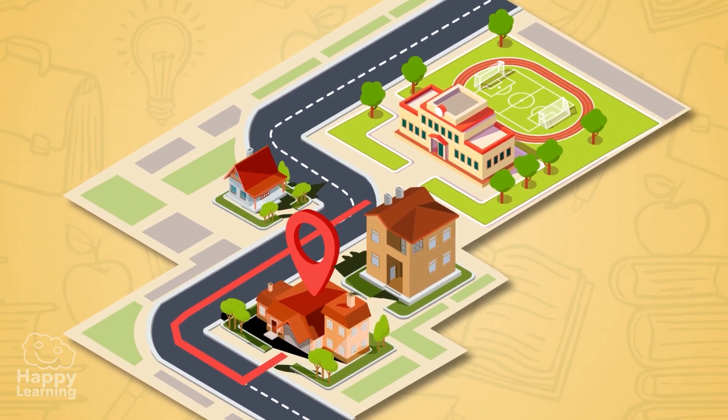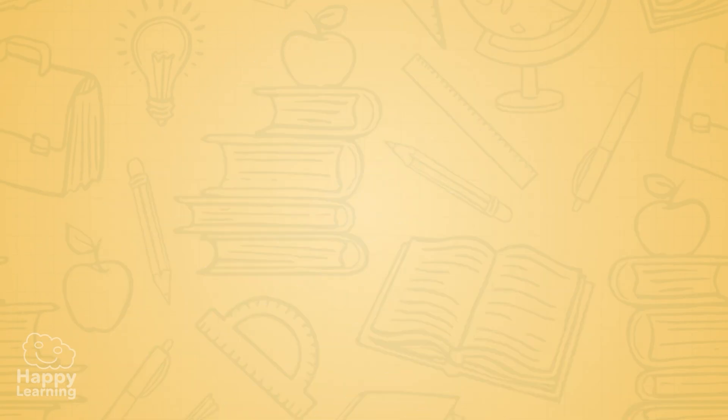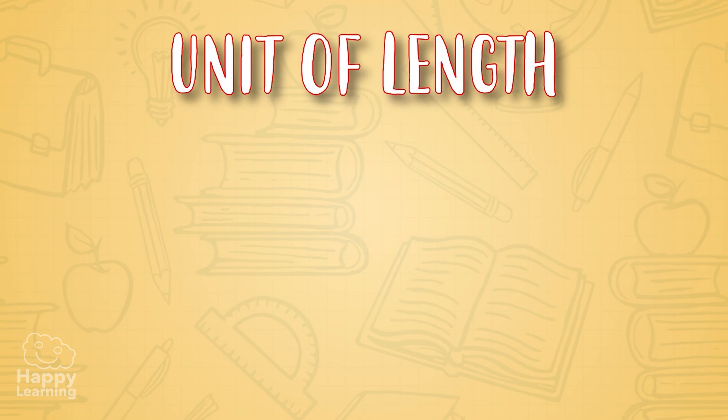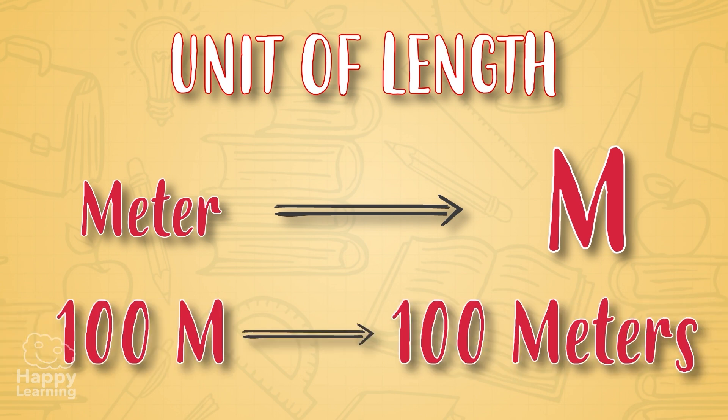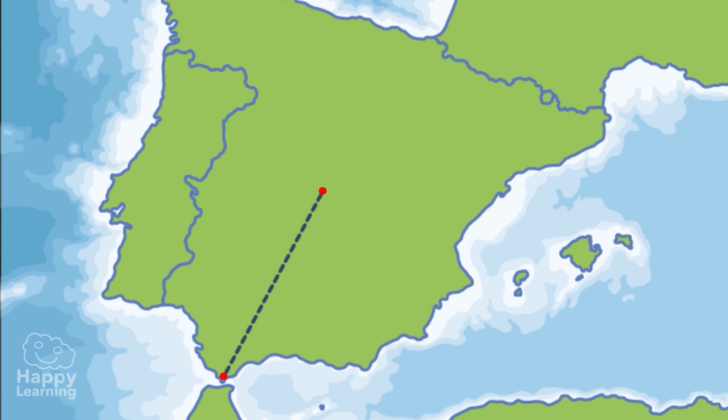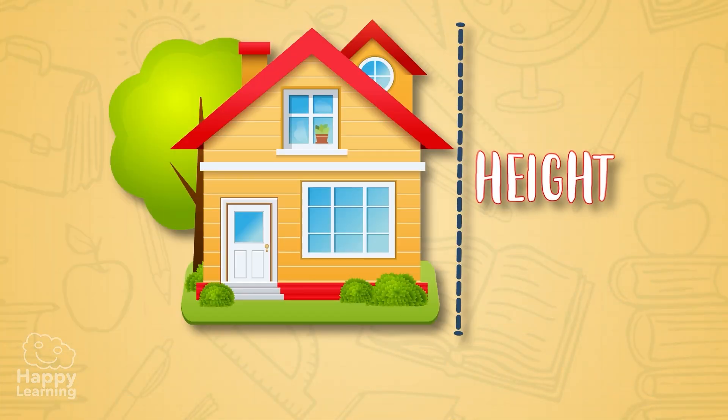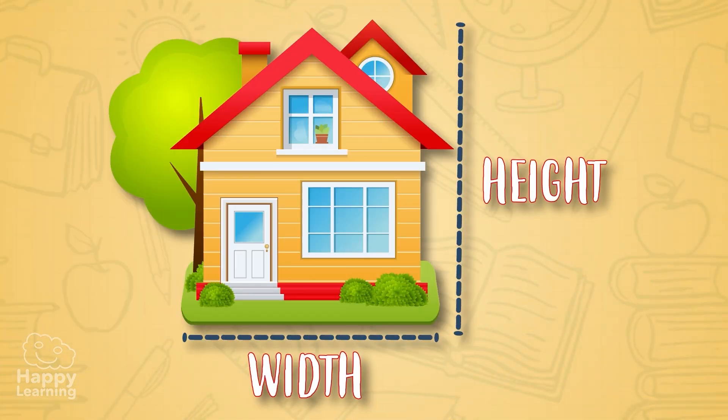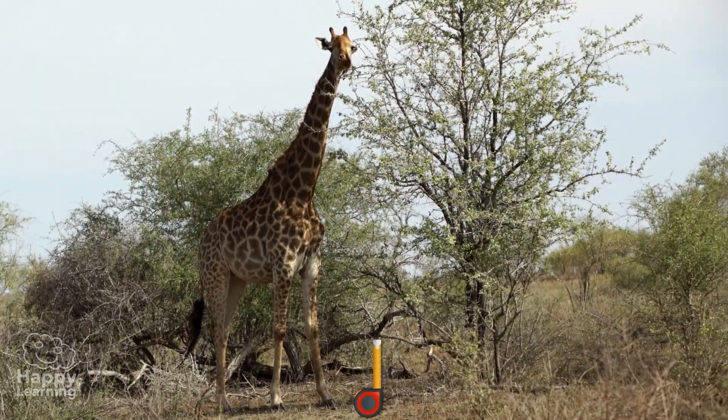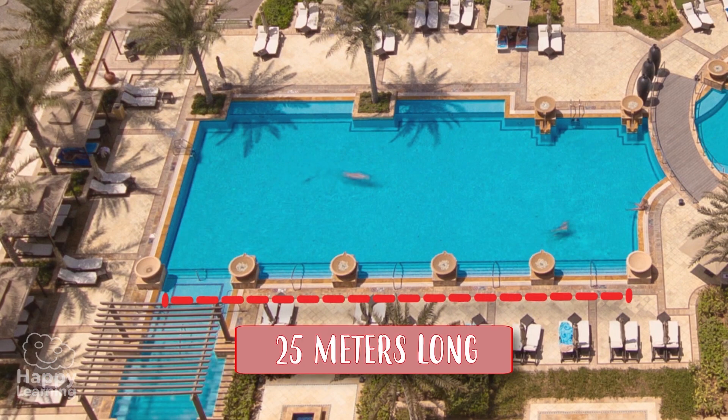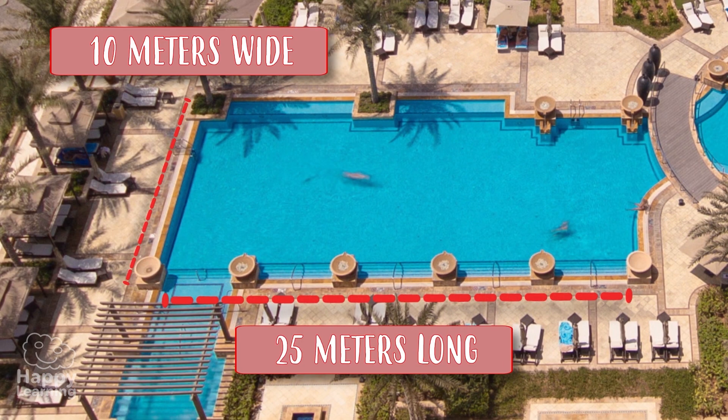As we said before, longitude is the distance there is between two points, like the distance between your house and school. The most important unit of length is the meter, represented by the letter m. The meter measures distances, but it also measures things such as height and width. This giraffe, for example, is 5 meters long, and this swimming pool is 25 meters long and 10 meters wide.